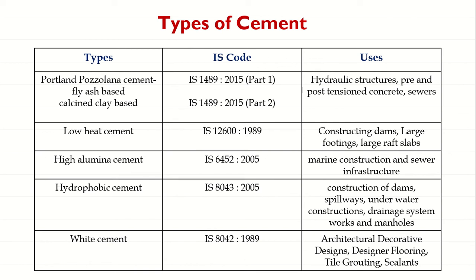PPC is also produced by adding pozzolana along with gypsum or calcium sulphate, or by intimately and uniformly blending Portland cement and pozzolana. You can grind all three together into fine powder, or add finely ground pozzolanic material to existing OPC to get PPC. This cement is very helpful for hydraulic structure constructions, pre- and post-tension concrete, sewers, and it has reduced heat of hydration.